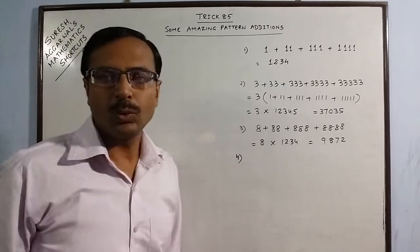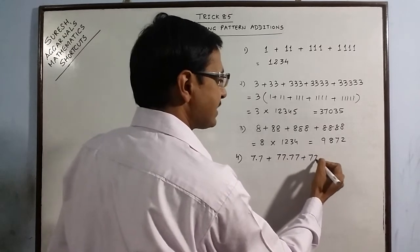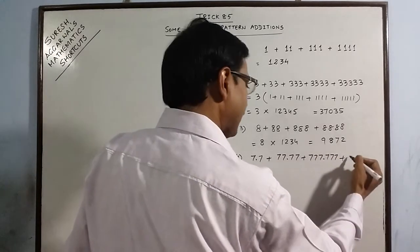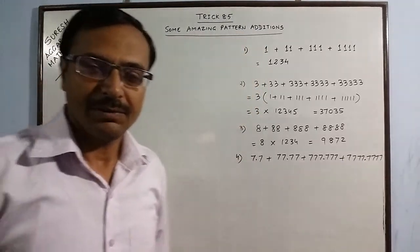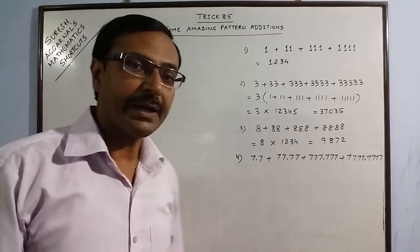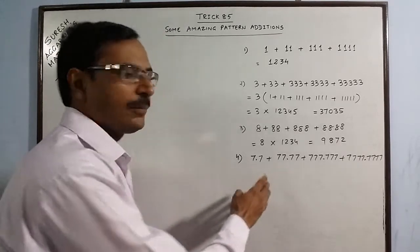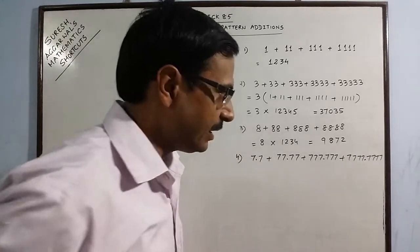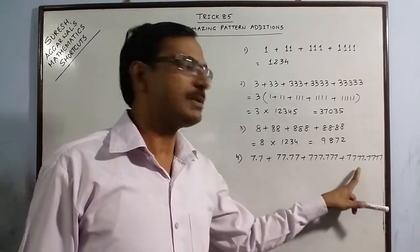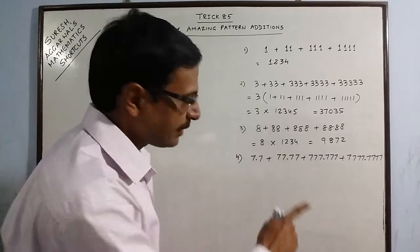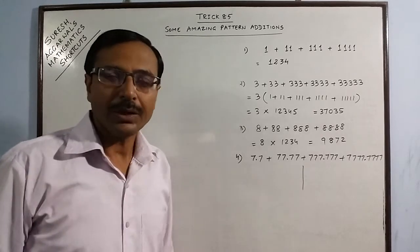Say we have to add 7.7 + 77.77 + 777.777 + 7777.7777. Writing them one underneath the other is very tedious. The rule here involves two steps because we have numbers both before and after the decimal. The number is the same — seven — appearing on both sides of the decimal, so for this kind of problem you do it in two steps.